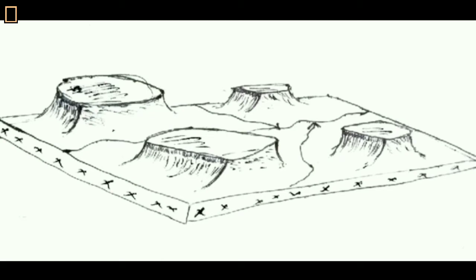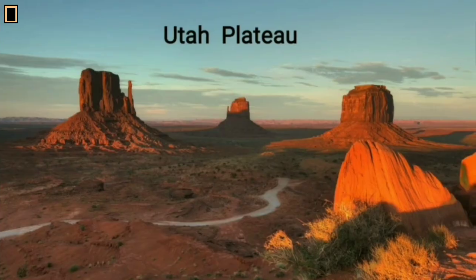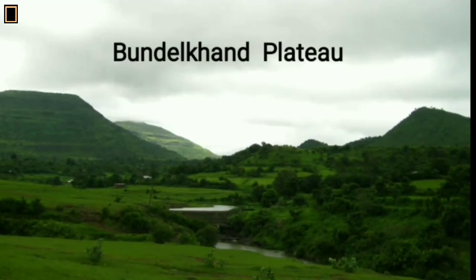There are some important features of dissected plateaus. They are derived from old extensive highlands by weathering, erosion, and denudation. Rocks remain hard and resist erosion. Inselbergs are formed in desert areas, and mesas are formed in semi-arid regions. Important examples of dissected plateaus are the Utah Plateau and the Bundelkhand Plateau of Central India.